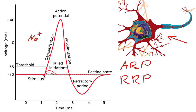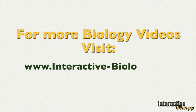So to summarize: you stimulate the axon and get an action potential. Voltage-gated sodium channels are either open or inactive, and you cannot stimulate it again — that is the absolute refractory period. Once they start resetting, you have the relative refractory period where you can stimulate another action potential, but you will need a stronger stimulus. That's the absolute and the relative refractory periods. I hope it makes sense. That's all for this video, and I'll see you on the next one.